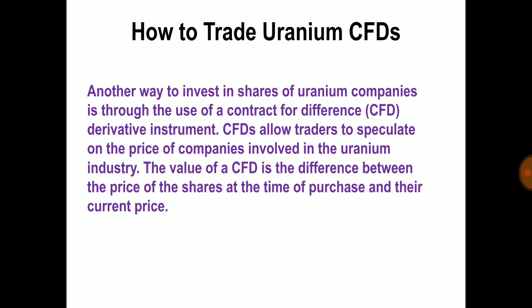Now let us look at how to trade uranium CFDs. CFDs, or contracts for difference, are another way to invest in shares of uranium companies through a derivative instrument. CFDs allow traders to speculate on the price of companies involved in the uranium industry. The value of a CFD is the difference between the price of the shares at the time of purchase and their current price. Some regulated brokers offer CFDs on shares of uranium companies, and customers deposit funds with the broker which serves as the margin.